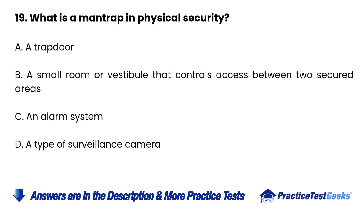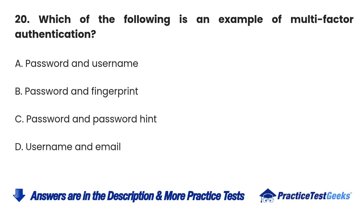Question 19: What is a man trap in physical security? A. A trap door. B. A small room or vestibule that controls access between two secured areas. C. An alarm system. D. A type of surveillance camera.